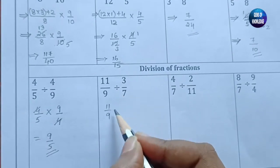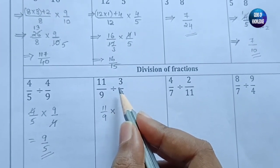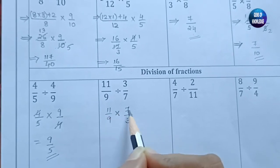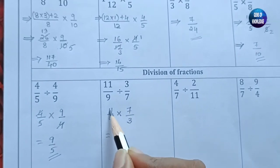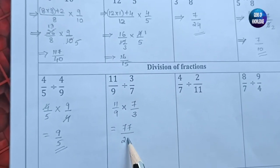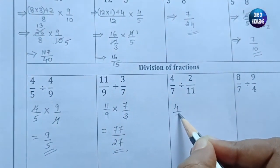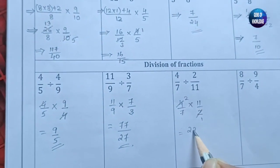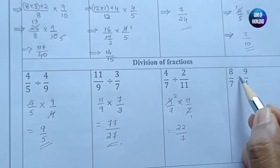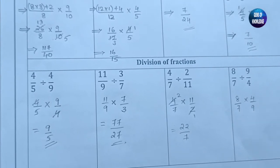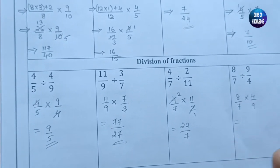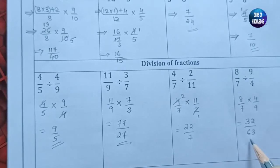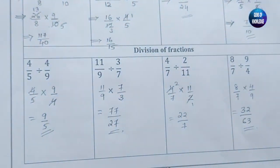For 11/9 divided by 3/7: change to multiplication and reverse to 7/3. Since nothing cancels, multiply: 11 sevens are 77 and 9 threes are 27, giving 77/27. Next, 4/7 divided by 2/11: reverse to 11/2, giving 2 twos are 4 and 2 elevens are 22 over 7, so 22/7. Last, 8/7 divided by 4/9: multiply 8 fours are 32 and 7 nines are 63, giving 32/63.